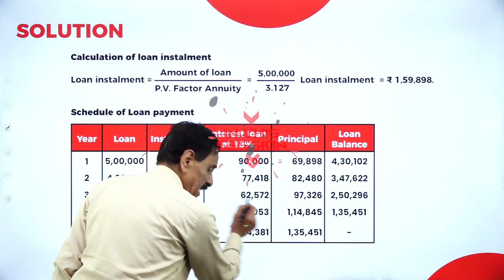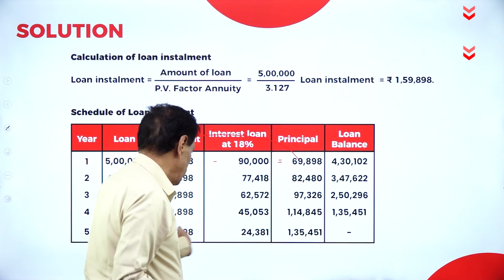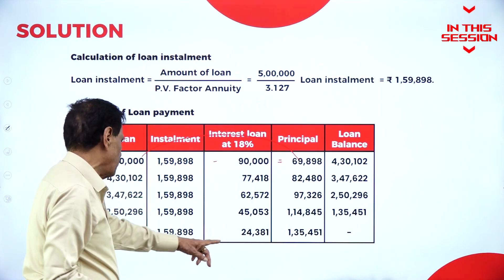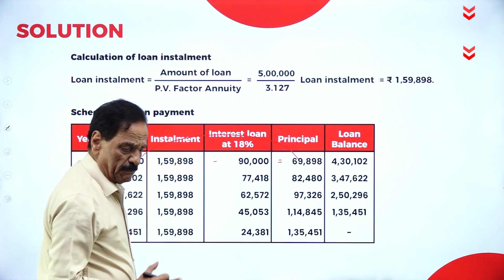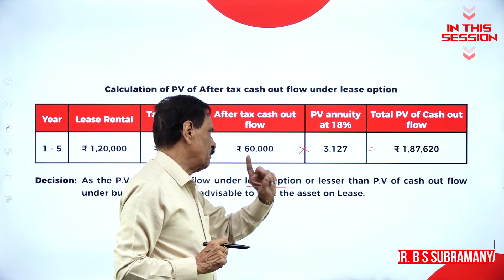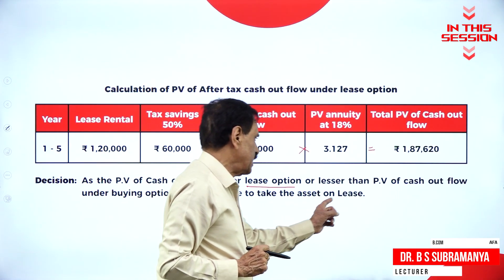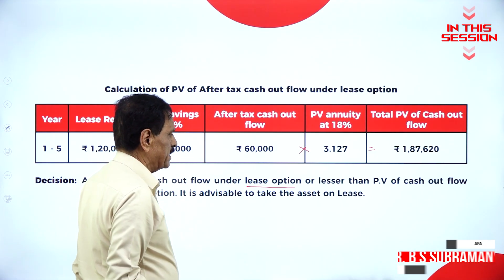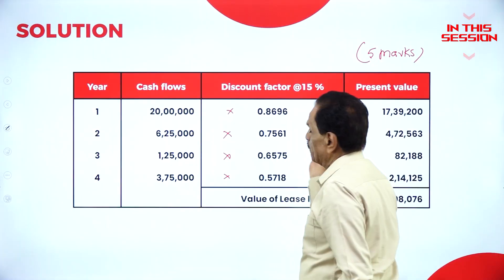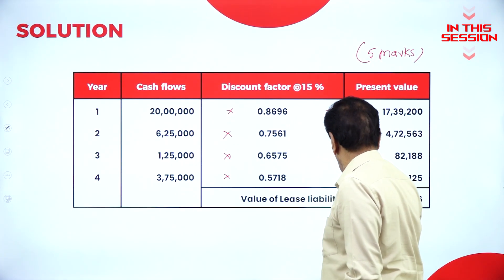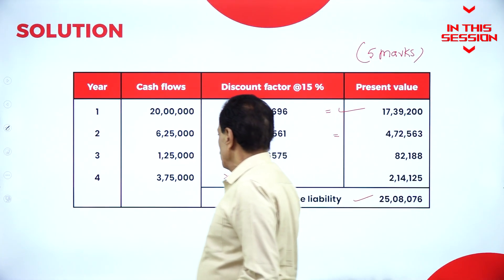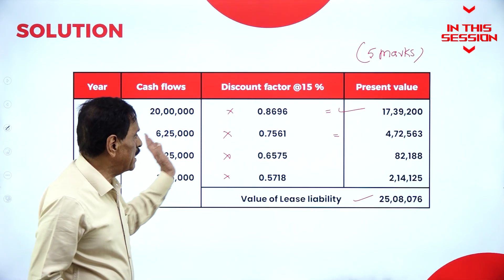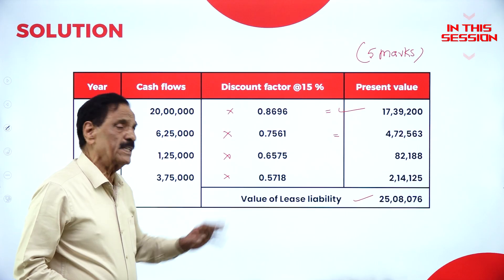There are two chances: either bad debt — here the balance we can make a deduction — or we can have the interest of 34,381. One or two rupees may be different. So lease option, lesser than PV of cash outflow, and buying option — it is advisable to take the asset on lease. Just multiply the discount factor to get the value. This type of problem will come; we have newly introduced it now, so the lease method will come like this.